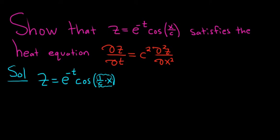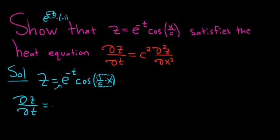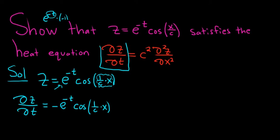Let's take the partial with respect to t — del z, del t. When we take the partial with respect to t, all of the x's are constants, so this whole cosine piece is completely constant and just hangs out. We just take the derivative of e to the negative t. The derivative of e to the negative t is e to the negative t times the derivative of the inside, which is negative 1. So we get negative e to the negative t cosine of 1 over c times x. That's going to be the left-hand side of the heat equation.